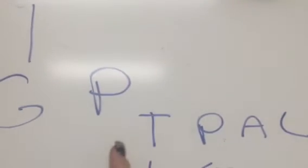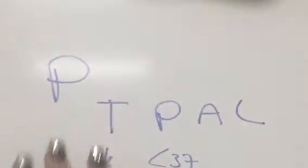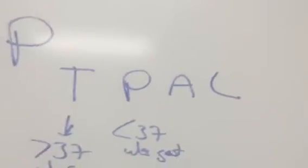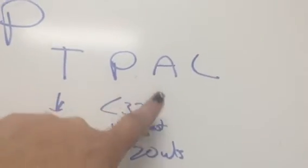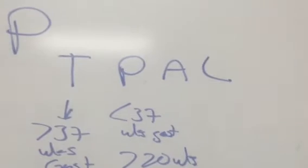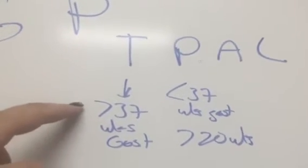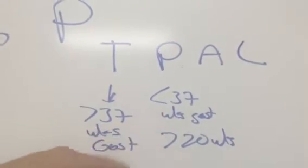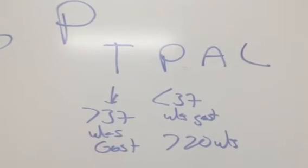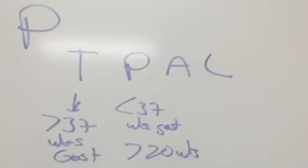Your G is your gravida; your P is your para — how many live deliveries or live births, and it doesn't necessarily mean how many babies. T is how many term deliveries; P is how many premature deliveries; A is aborta; and L is living. When dividing term versus preterm, the cutoff is 37 weeks. Greater than or equal to 37 weeks gestation is term; less than 37 weeks gestation is preemie, more exactly between 20 weeks and 37 weeks.